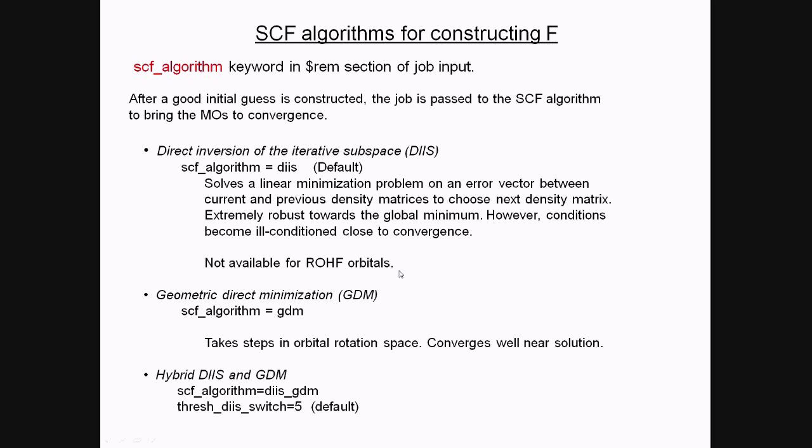The second algorithm is known as GDM, or Geometric Direct Minimization. This takes steps in a different space, the orbital rotation space, and is very good for converging near the solution. So often you can set up a hybrid DIIS-GDM calculation where it'll start out with DIIS up to a certain threshold. So 10 to the negative 5 convergence of energy is a pretty good one, and then switch to GDM and finish the calculation there.